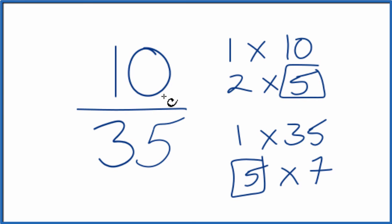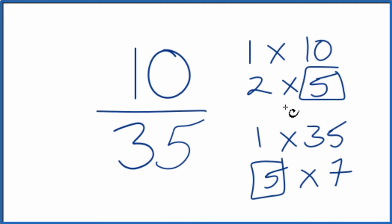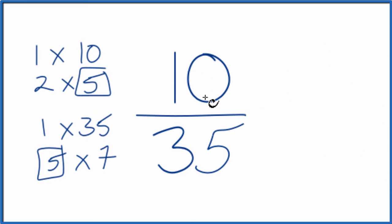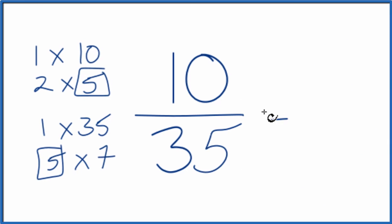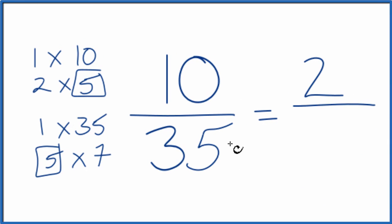So what we'll do is we'll divide 10 by 5, 35 by 5, and we'll have simplified 10 35ths. Let's move these over here. So 10 divided by 5, that gives us 2, and then 35 divided by 5, that's 7.